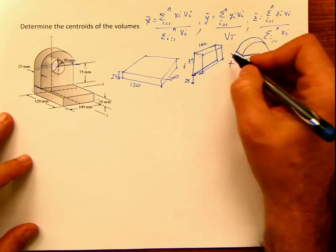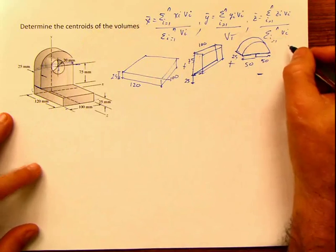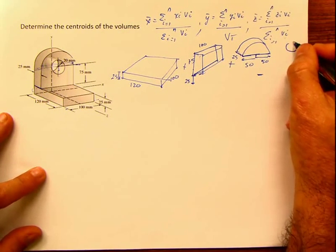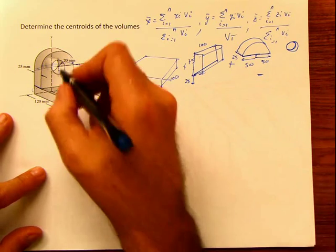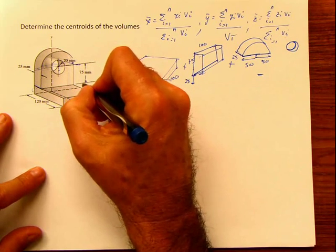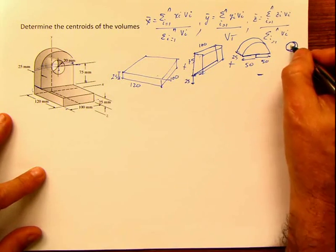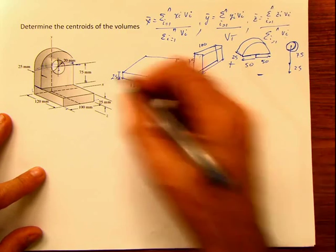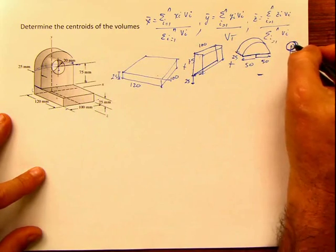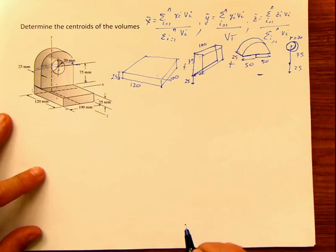After that, I'm going to subtract this hole. That hole is suspended 75 millimeters from this base, which is 25 — so from here to here is 75, and from here to here is 25. The radius for that hole is 20.